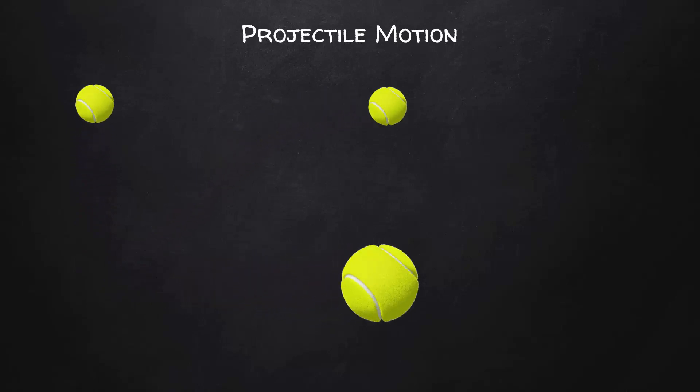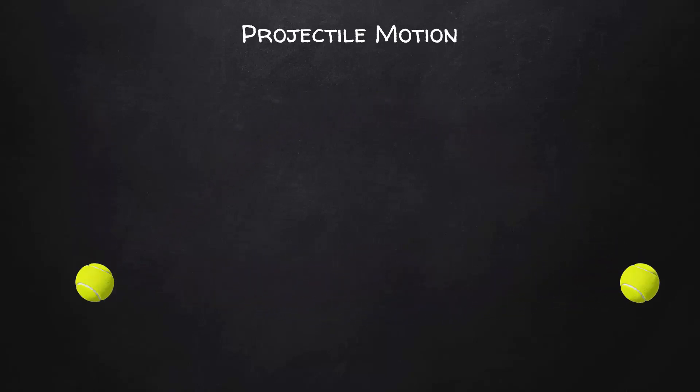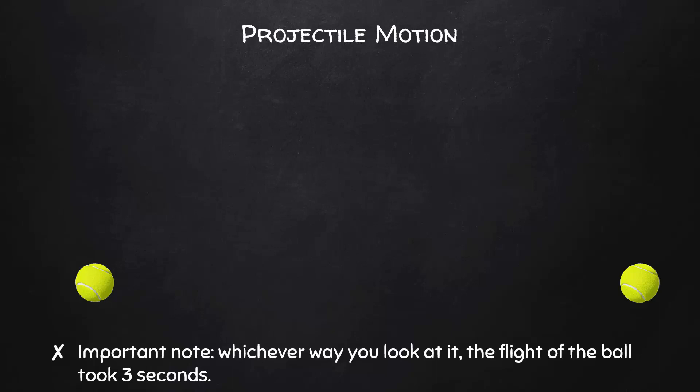Let's put all those views together. An important thing to note is that, whichever way we look at it, the flight of the ball took 3 seconds. If we examine just the vertical motion, it took 3 seconds to rise and fall. If we look at just the horizontal motion, it traveled to the right at a constant velocity for 3 seconds. Time is what connects the vertical motion and the horizontal motion.